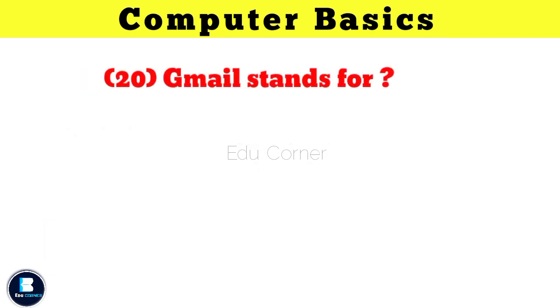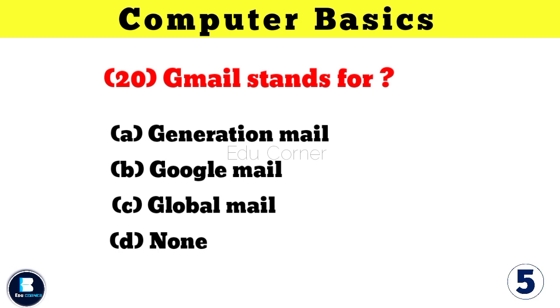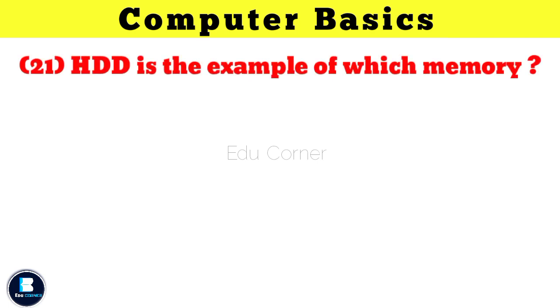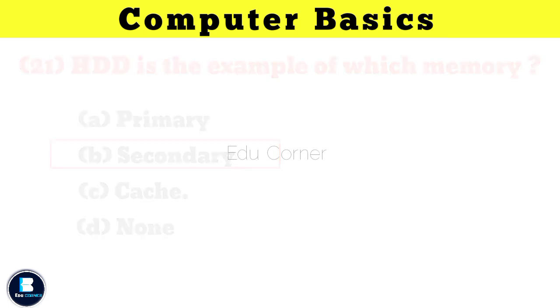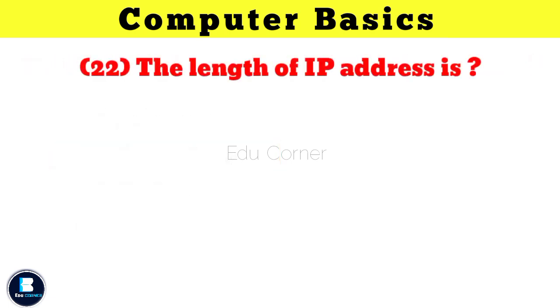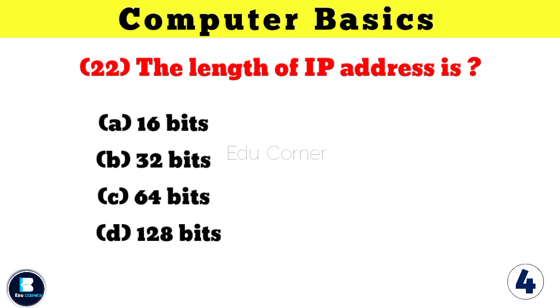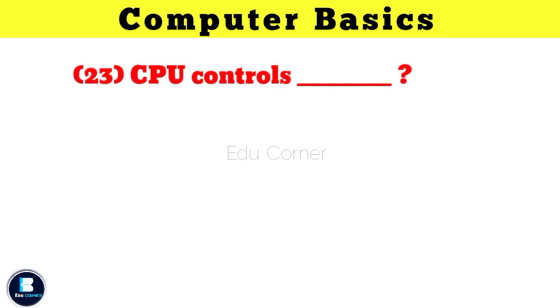Gmail stands for Google Mail. HDD is the example of which memory? Secondary. The length of IP address is 32 bits.